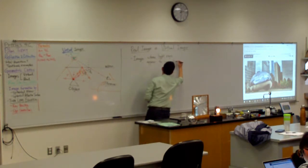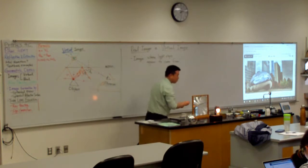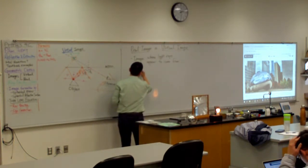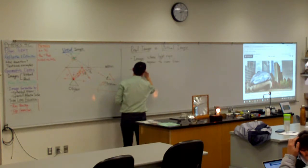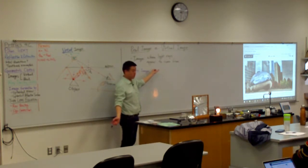And I guess it's better to define just the word real. So when you have a real image, not only do the light rays appear to come from there, the light rays actually come from the image.